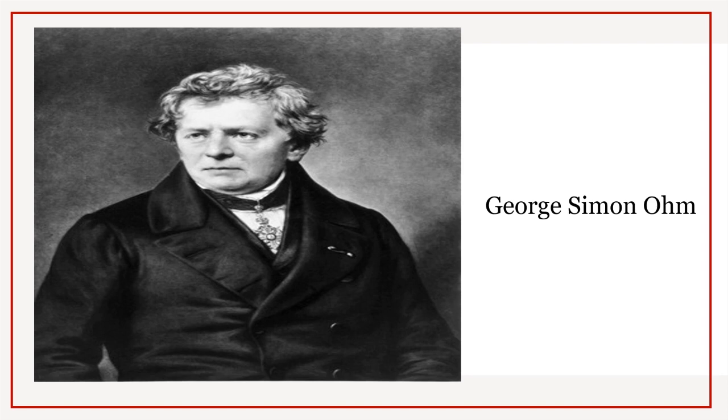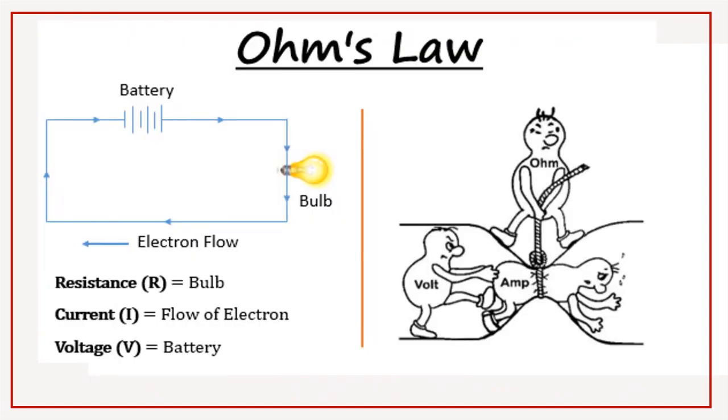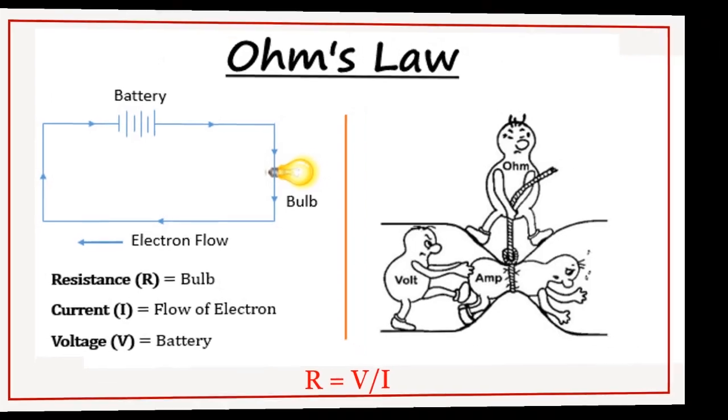Judge Simon Ohm in 1827 described measurements of applied voltage and current through simple electrical circuits containing various lengths of wire.